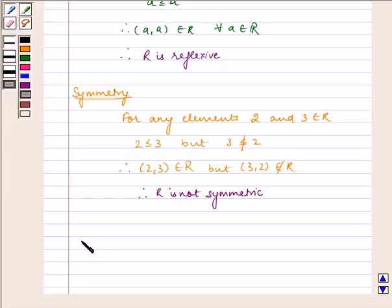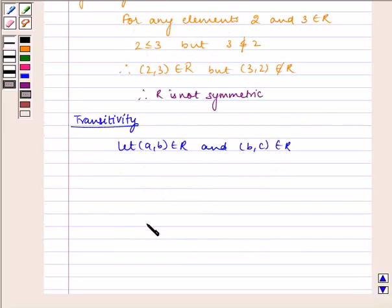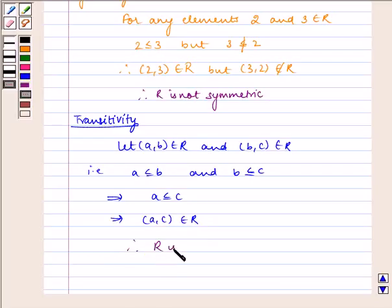Now let us check for transitivity. Let (a,b) belongs to R and (b,c) belongs to R. That is, a is less than or equal to b and b is less than or equal to c, which implies a is less than or equal to c, which implies (a,c) belongs to R. Therefore, R is transitive.